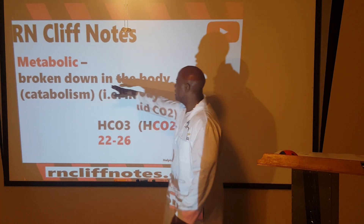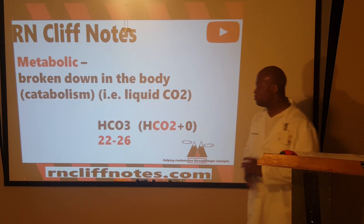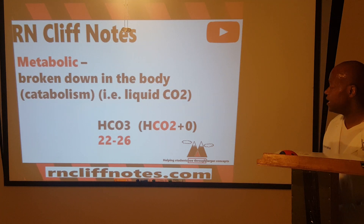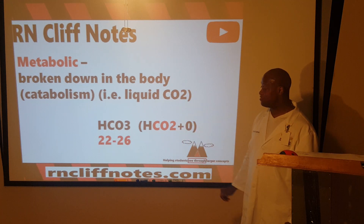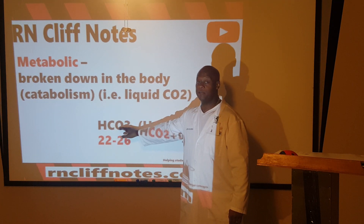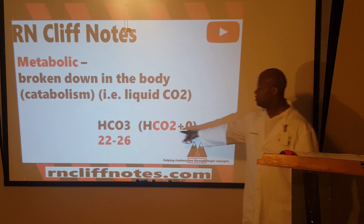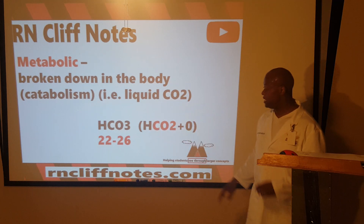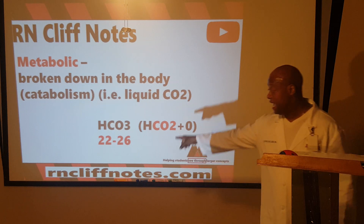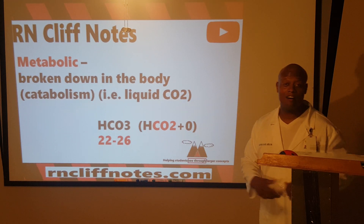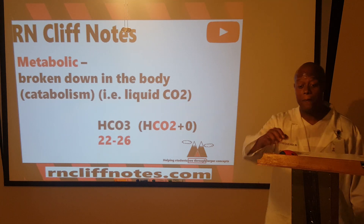For our purposes, the substance broken down in the body via catabolism is CO2. Bicarbonate — HCO3 — naturally contains CO2: HCO2 plus one more oxygen makes up bicarbonate. So bicarb naturally has CO2 in it. Our bicarb reference range is 22 to 26.